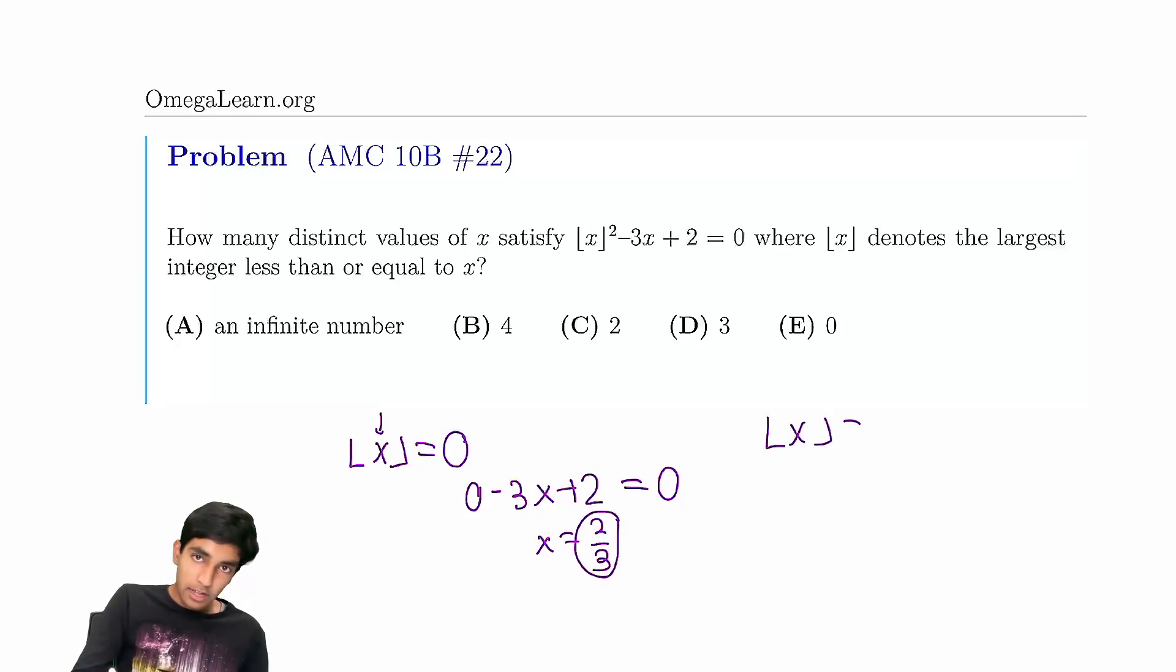Now what if floor of x is 1? Now we would have 1 minus 3x plus 2 equals 0. We can solve here, we get 3 equals 3x, so x is indeed 1. And that also clearly satisfies floor of x as 1.